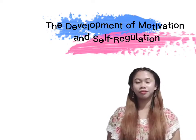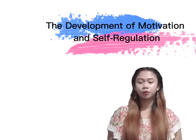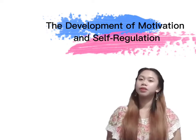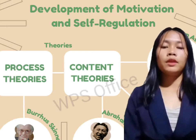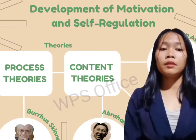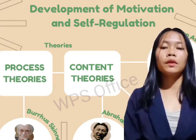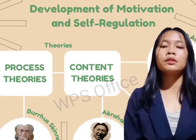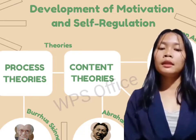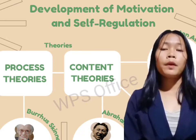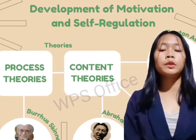Let us now start exploring the development of motivation and self-regulation. Motivation often describes a system of needs that motivate people's actions. Content theory includes the work of David McClelland, Abraham Maslow, and other psychologists as they attempted to explain why human needs change but not how they change. While process theories of motivation attempt to explain how and why our motivation affects our behaviors.